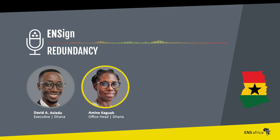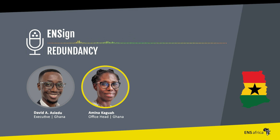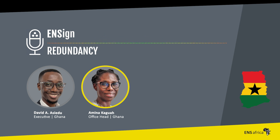The chief labour officer is a government official in the labour office. The third thing, and probably most important, is that the employer must pay the employees that are impacted redundancy pay. The law does not define redundancy pay, and what most employers do is to define redundancy pay or package in their employment documents such as an employee handbook, the employment contract, or other employment documents.